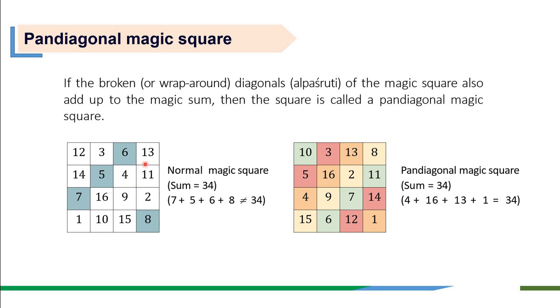Now if we wrap up or break this column 13, 11, 2, 8 and shift it here, then the new diagonal that we get is 6, 5, 7, 8, and that doesn't add up to the sum 34.